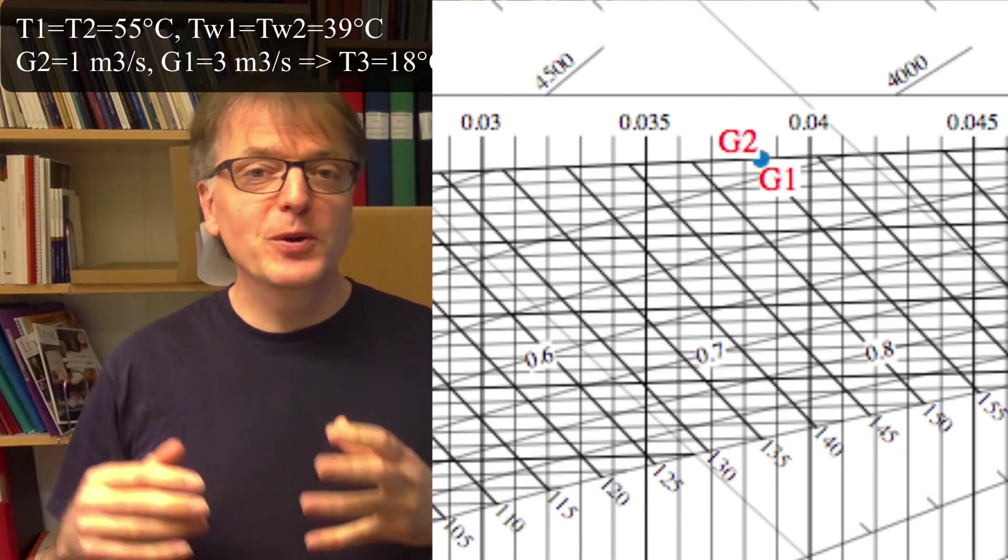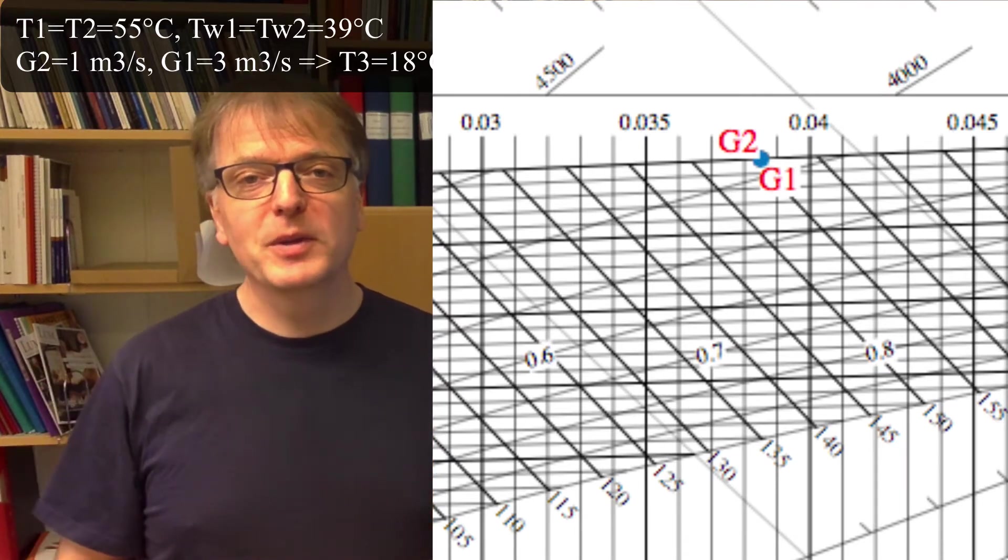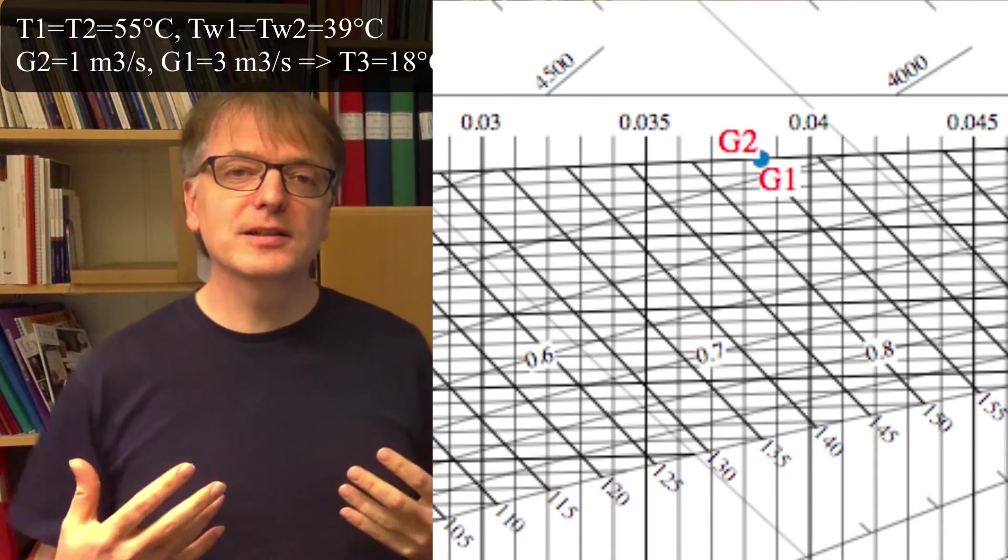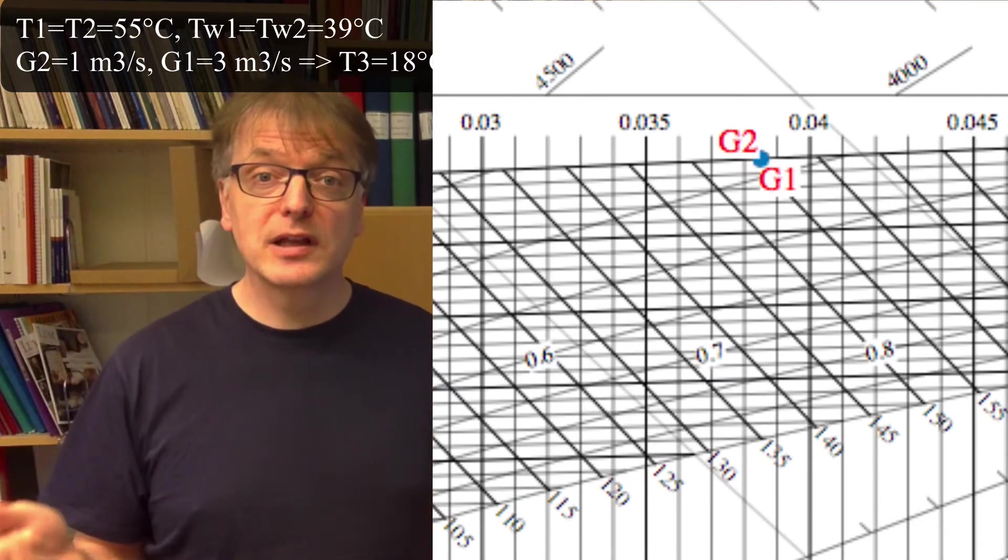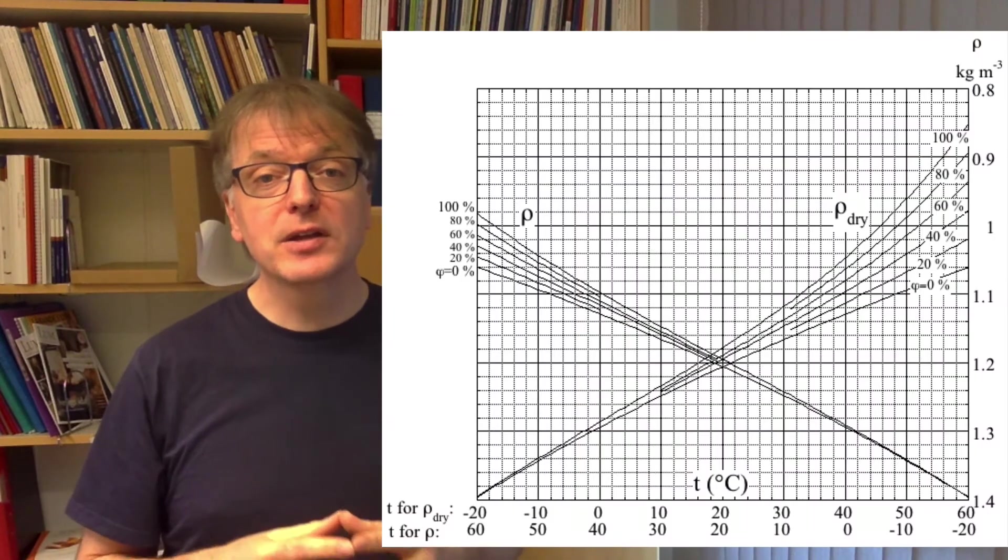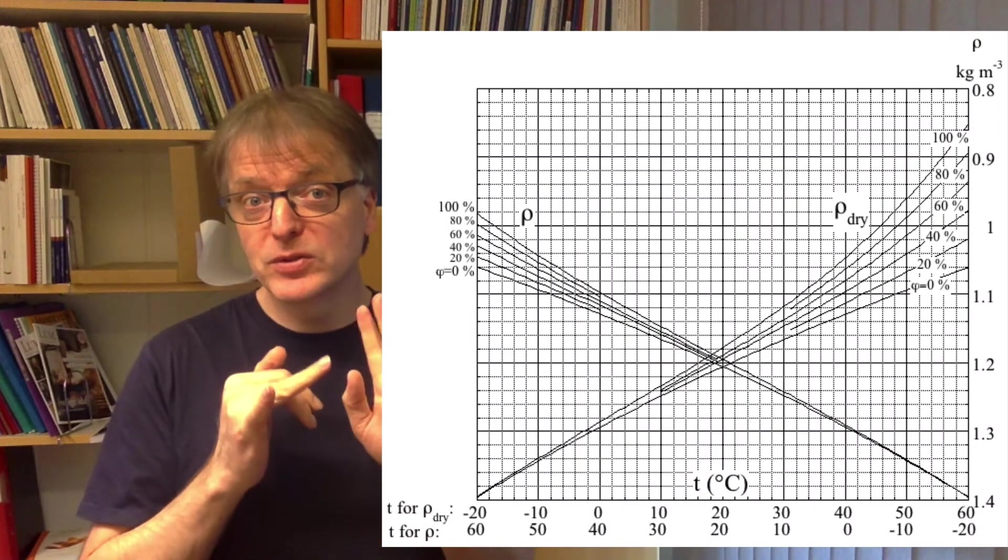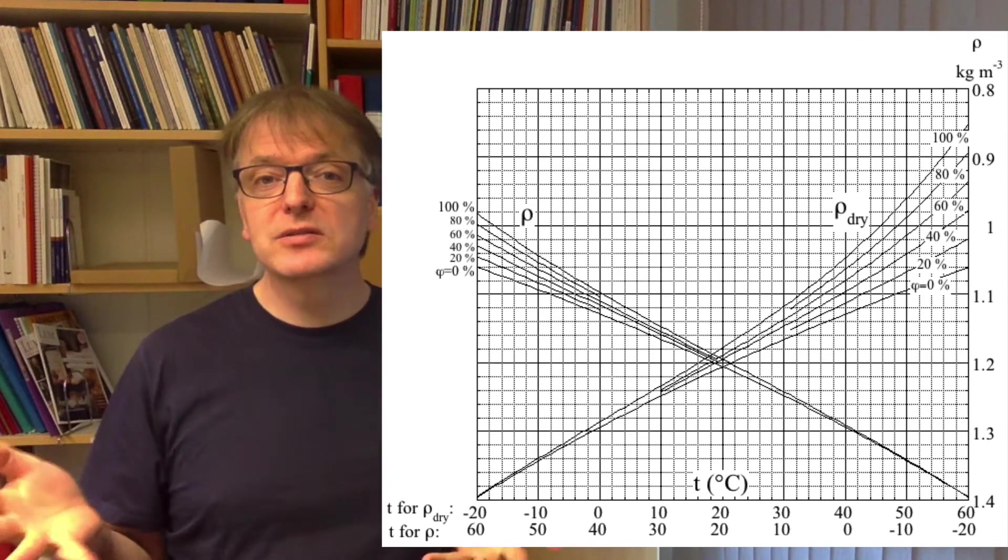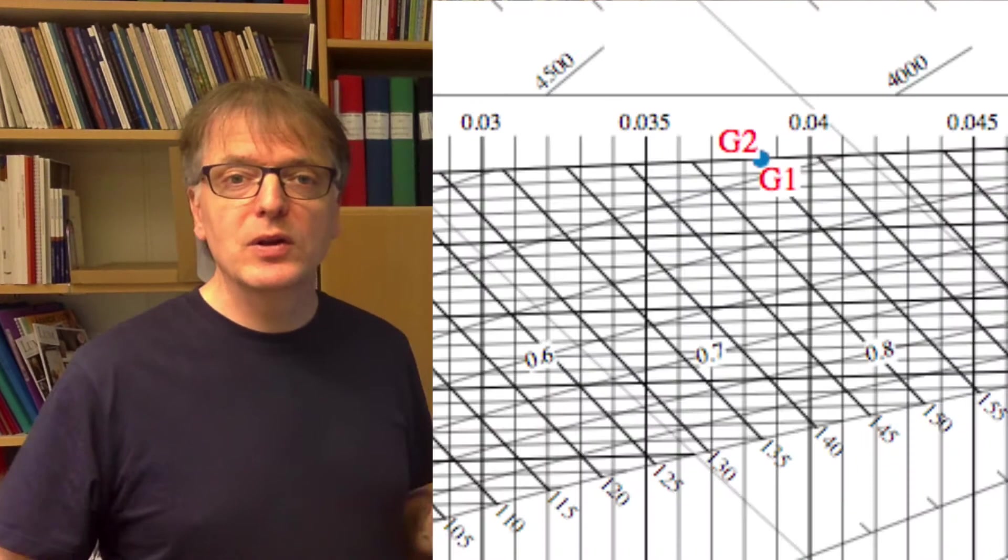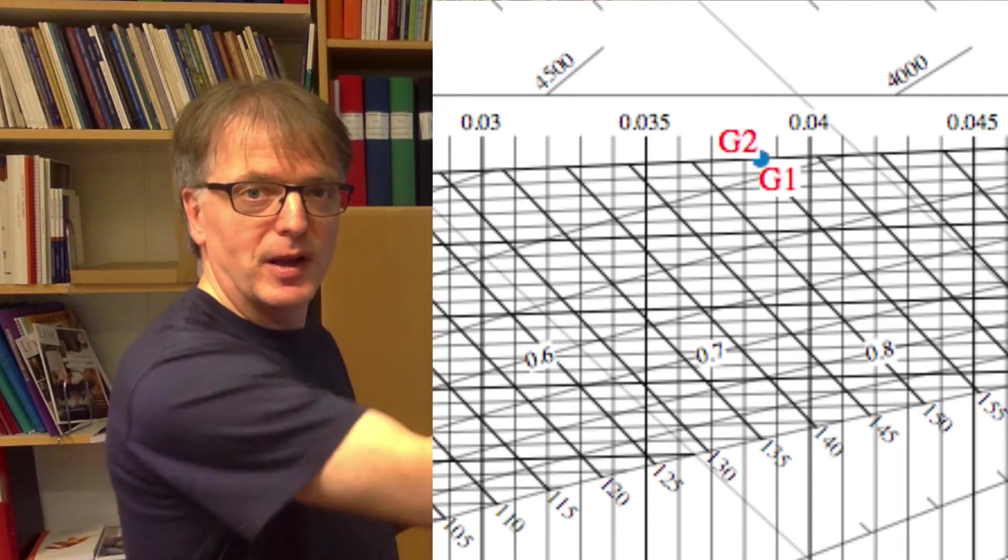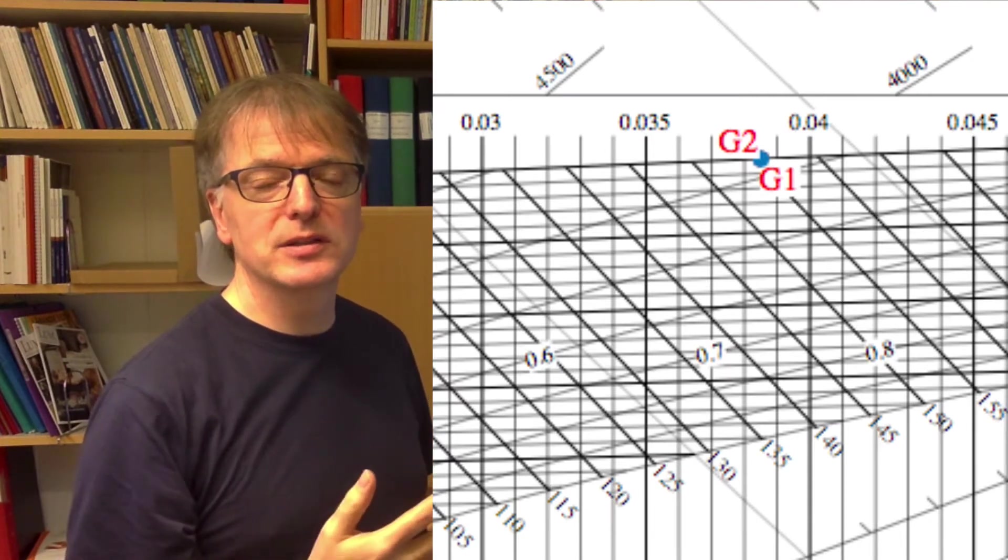If you use graphs to determine the density, which we need to translate cubic meters per second to kilograms of dry air per second, you will need not only the temperature of the air, but also the relative humidity. So what is the relative humidity? Well, you look at the diagram, Mollier diagram, and where you put your point for G1 and G2.